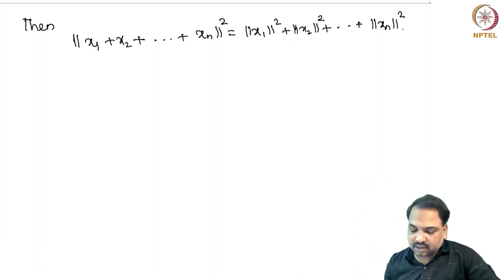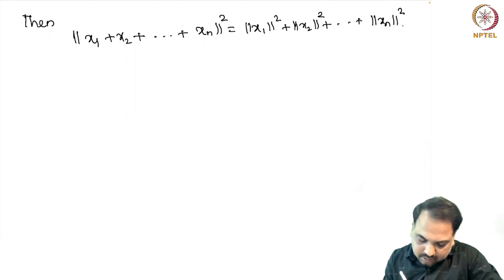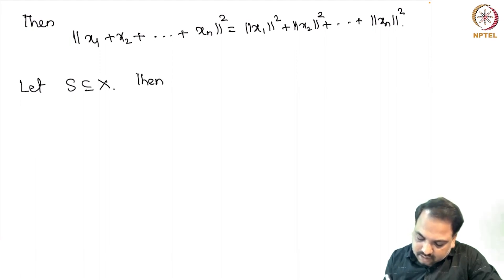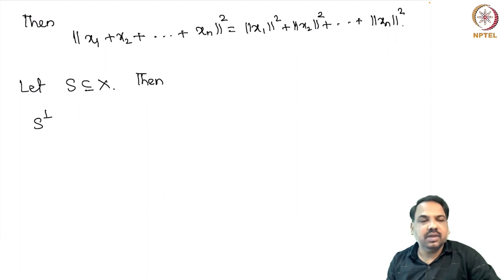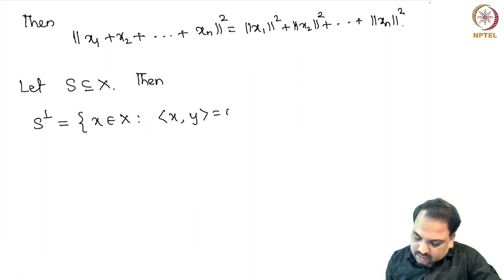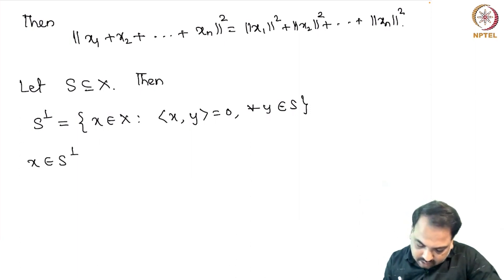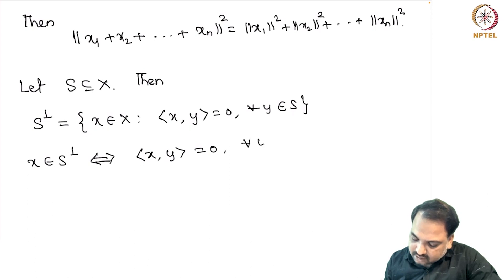This orthogonality concept we can even define for any subset of an inner product space. So let S be a subset of X. Then we define S⊥, or the orthogonal complement of S in X, as follows: the set of all x in X such that ⟨x, y⟩ = 0 for every y in S. That means all those vectors x in X which are orthogonal to every vector in S. So x is in S⊥ if and only if x is orthogonal to y for every y in S.